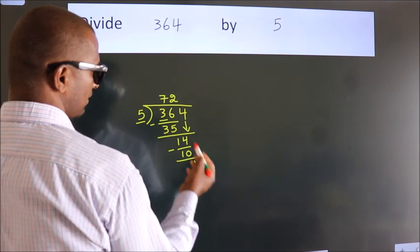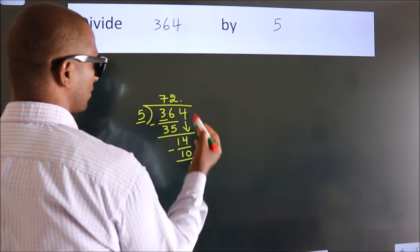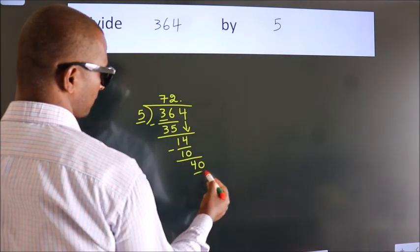After this, no more numbers to bring down. So what we do is we put a dot and take 0. So 40.